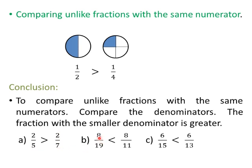Next: Compare 8 by 19 and 8 by 11. The fraction 8 by 11 has a smaller denominator, so 8 by 11 is the greater fraction. We put the less than sign between the two fractions. Thus, 8 by 19 is less than 8 by 11. Last example: Compare 6 by 15 and 6 by 13. Here, 6 by 13 has a smaller denominator, so 6 by 13 is the greater fraction. Thus, 6 by 15 is less than 6 by 13.